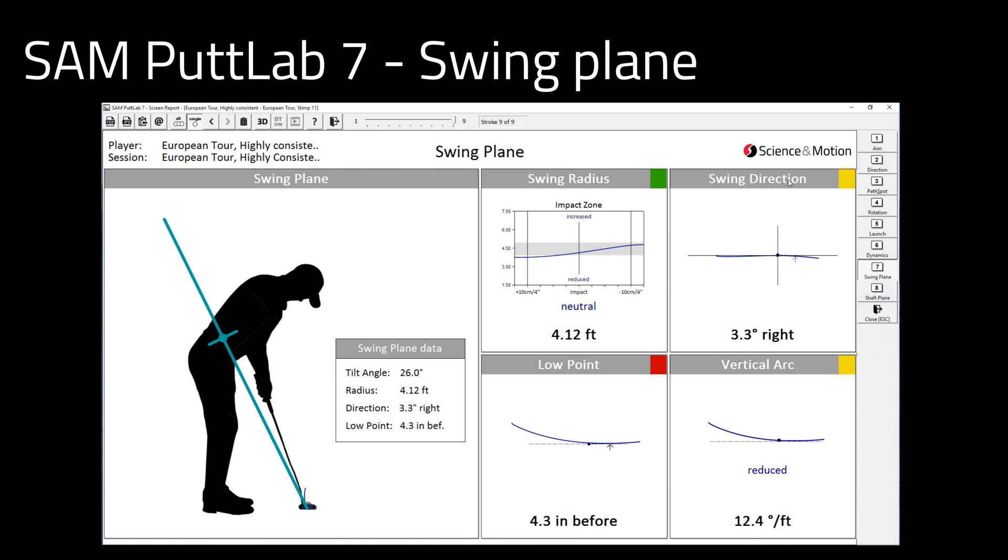The vertical arc also depends on the swing radius. For a small radius, the vertical arc will be rather increased. For this putt, the vertical arc is 12.4 degrees per feet, which is rated as being slightly reduced.